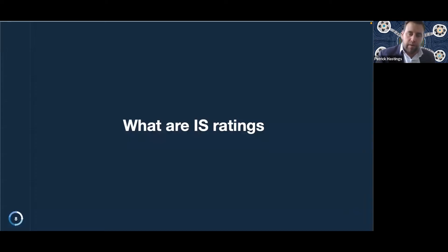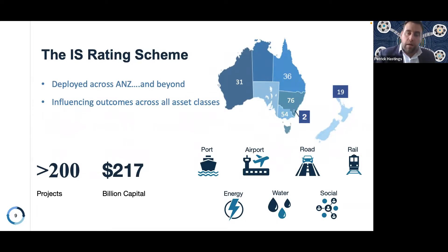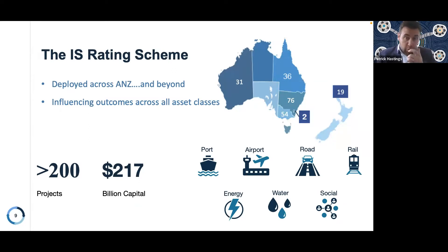The IS rating scheme is the overarching scheme that drives sustainability benchmarks. Sitting underneath the rating scheme are a multitude of rating tools. The IS rating scheme is deployed across Australia and New Zealand and across a multitude of asset classes. In South Australia there are four projects and in the Northern Territory we recently welcomed our first project.